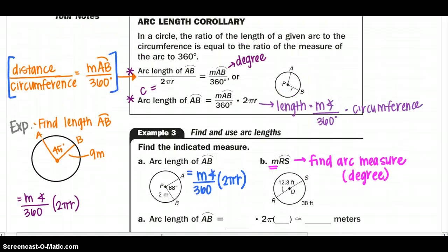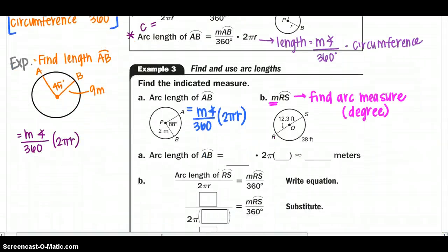So either way you like to write it will be just fine using that. Let's go down to example 3 using the arc length. So A tells us that the arc length, we want to find the arc length of AB. So not the degree, but the measure of arc length compared to our circumference. So if we want to, I've written the equation that we want to use because we're finding the arc length.